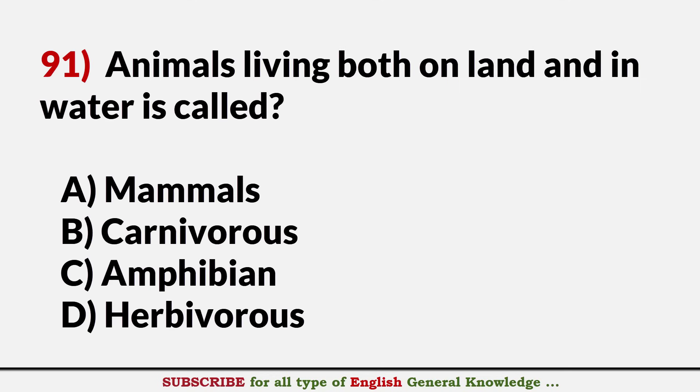Animals living both on land and in water are called? Answer C. Amphibian.